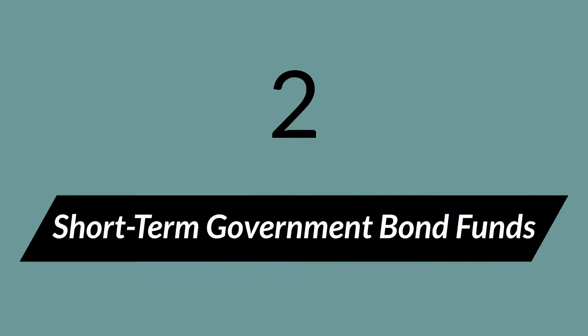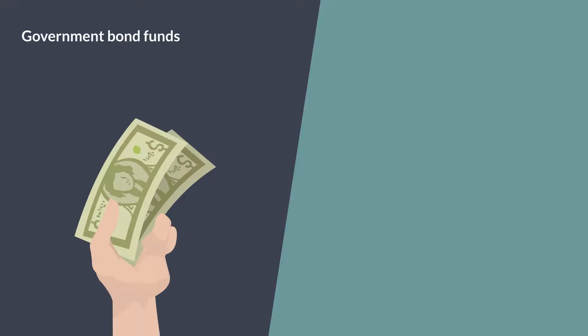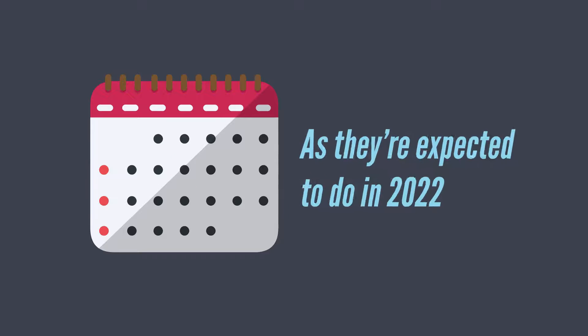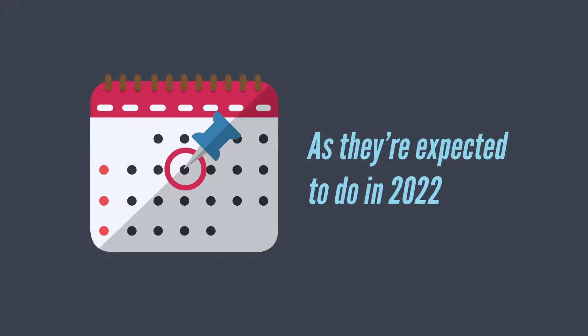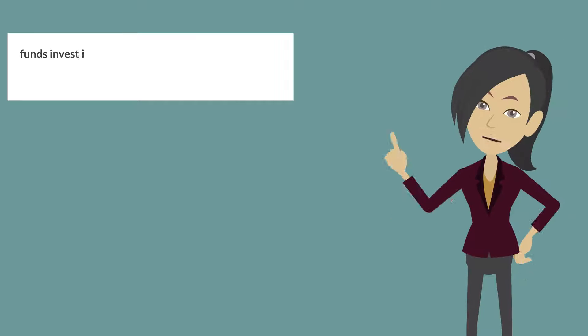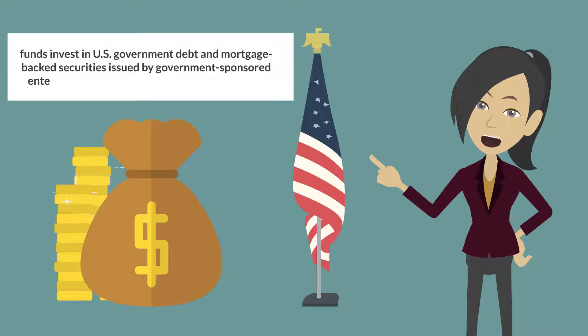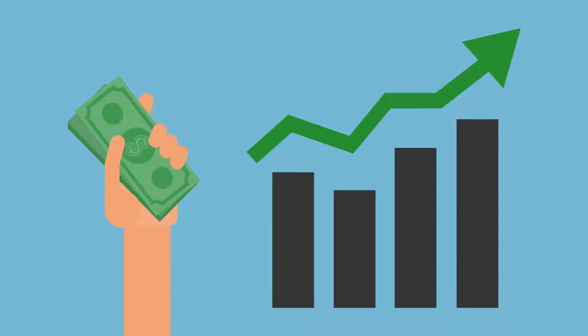Short-Term Government Bond Funds. Government bond funds are mutual funds, or ETFs, that invest in debt securities issued by the U.S. government and its agencies. Like short-term CDs, short-term government bond funds don't expose you to much risk if interest rates rise, as they are expected to do in 2022. The funds invested in U.S. government debt and mortgage-backed securities issued by government-sponsored enterprises such as Fannie Mae and Freddie Mac.